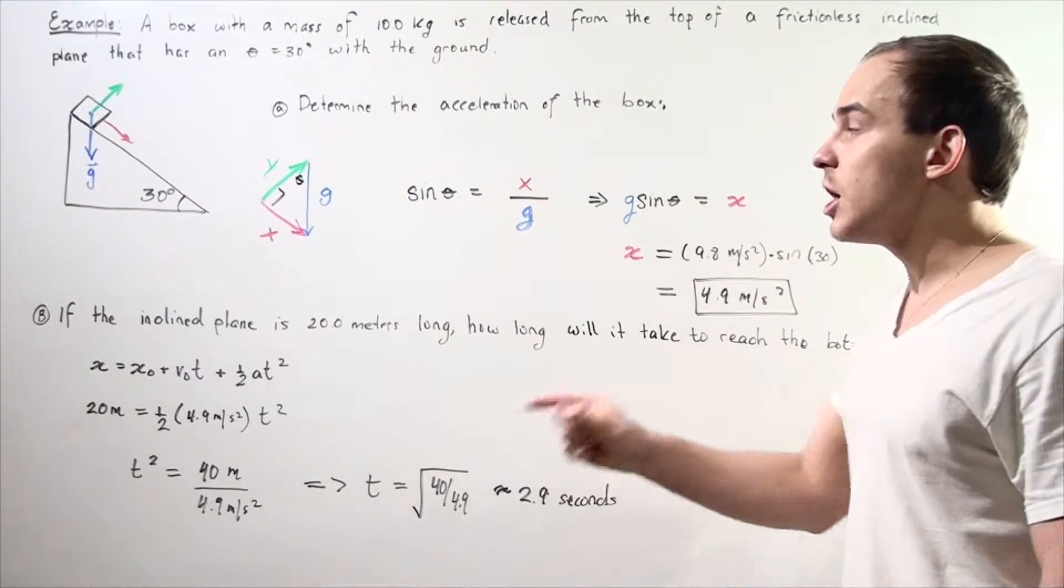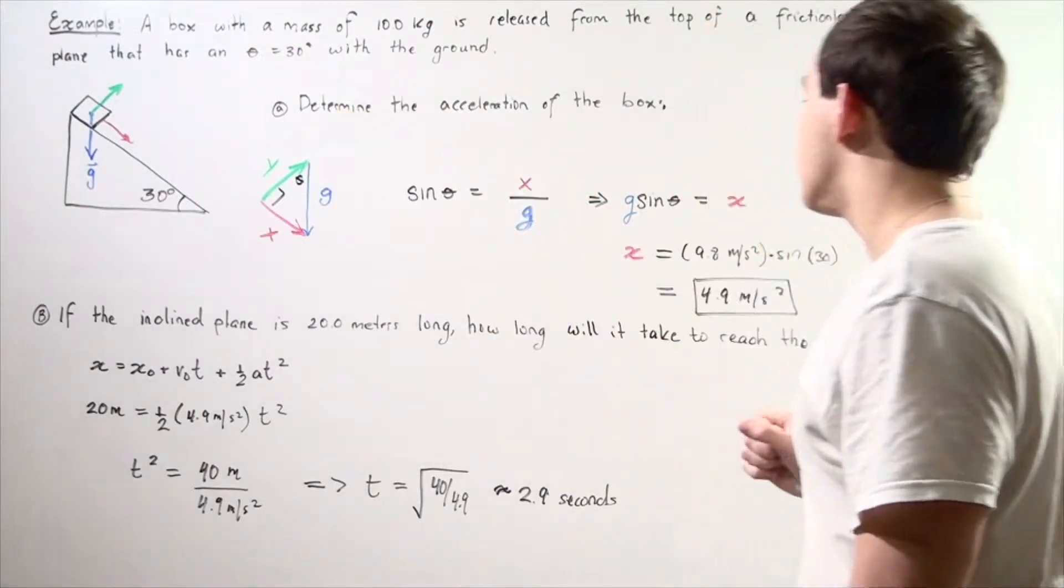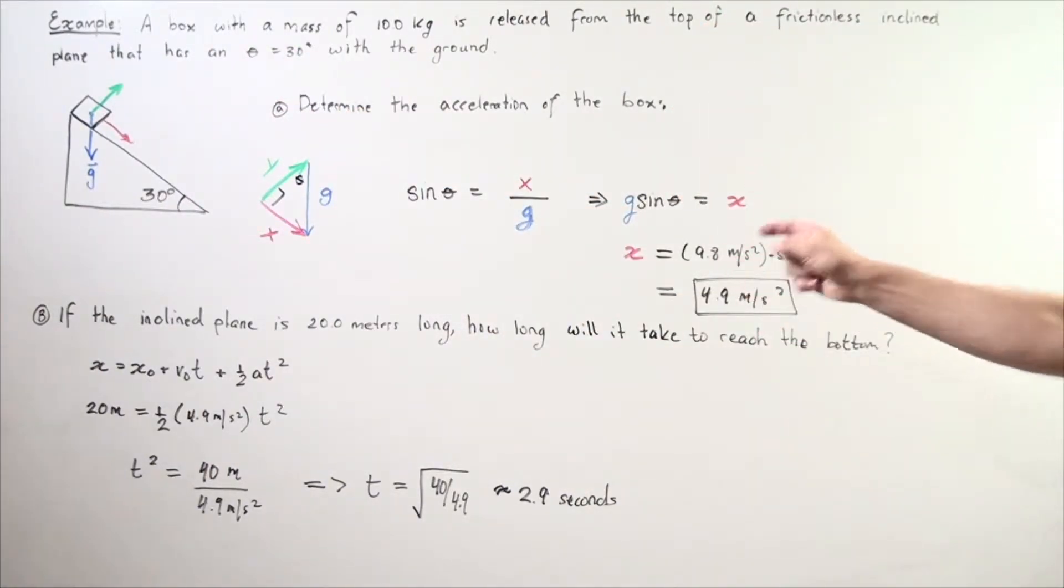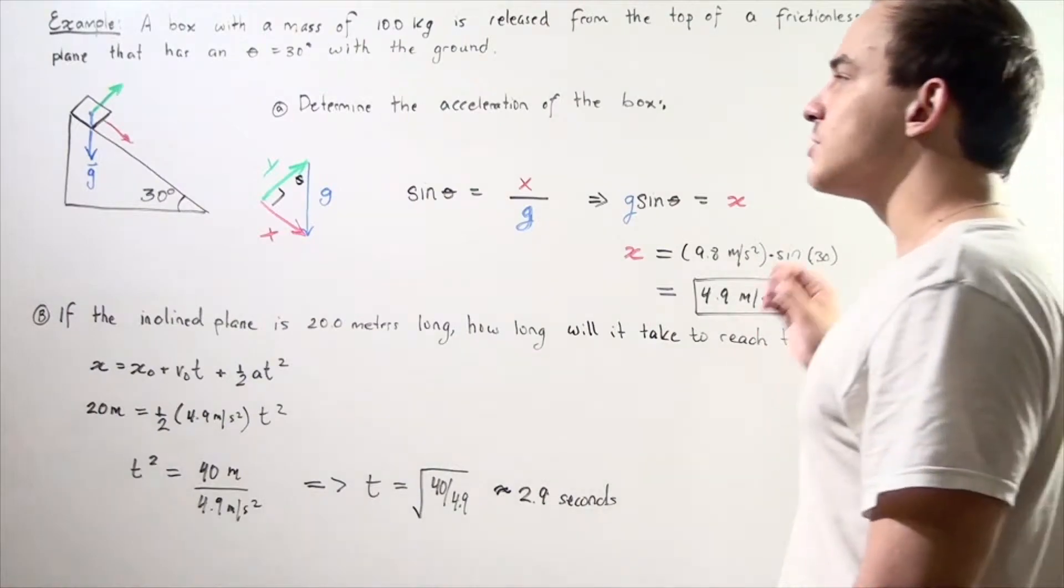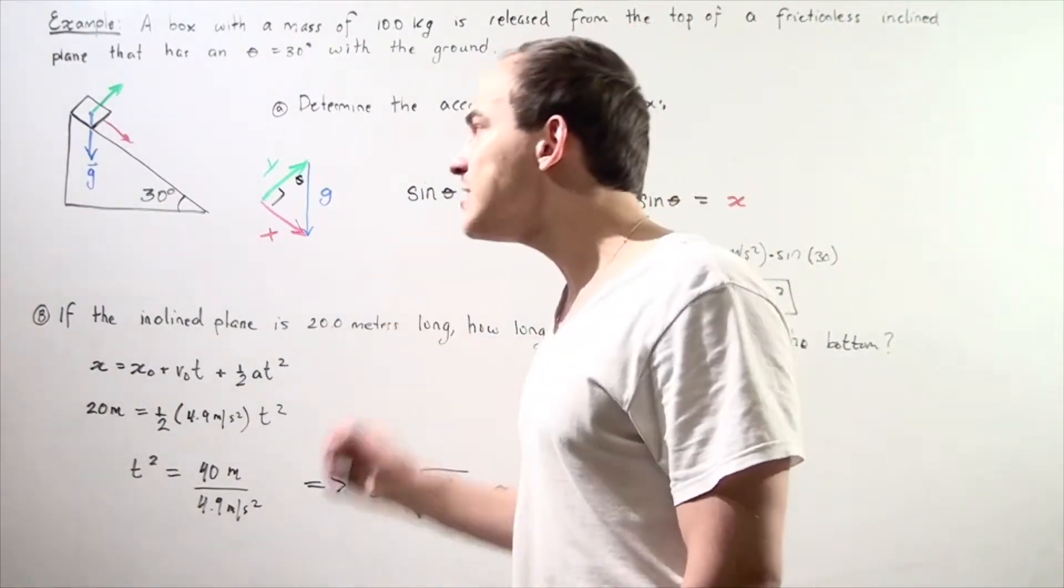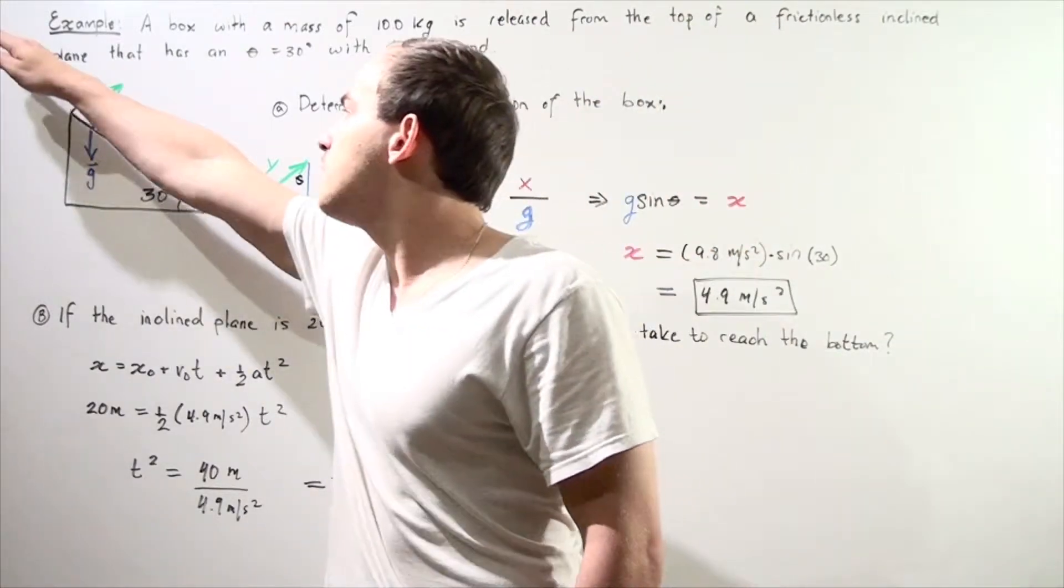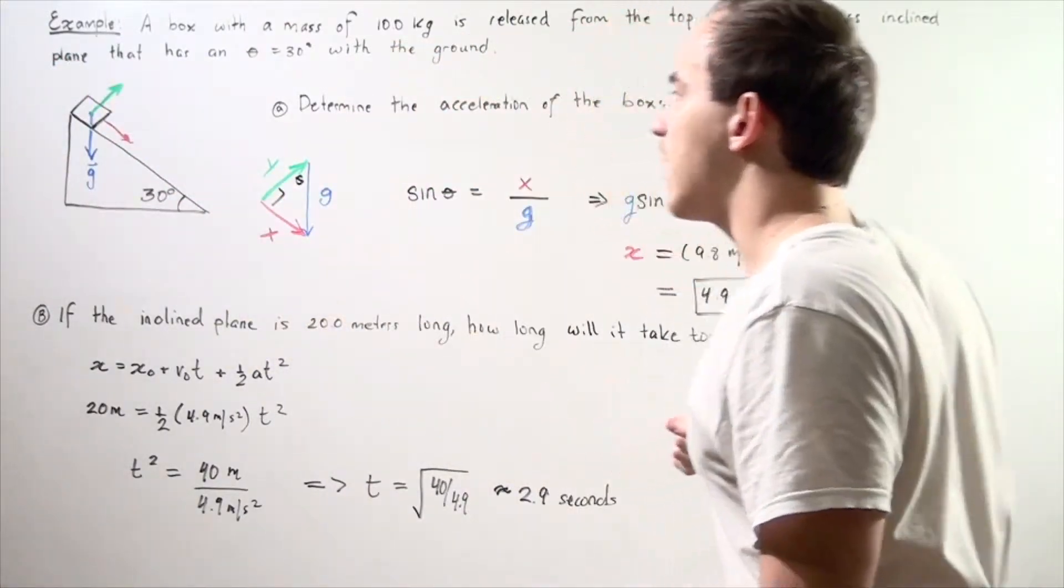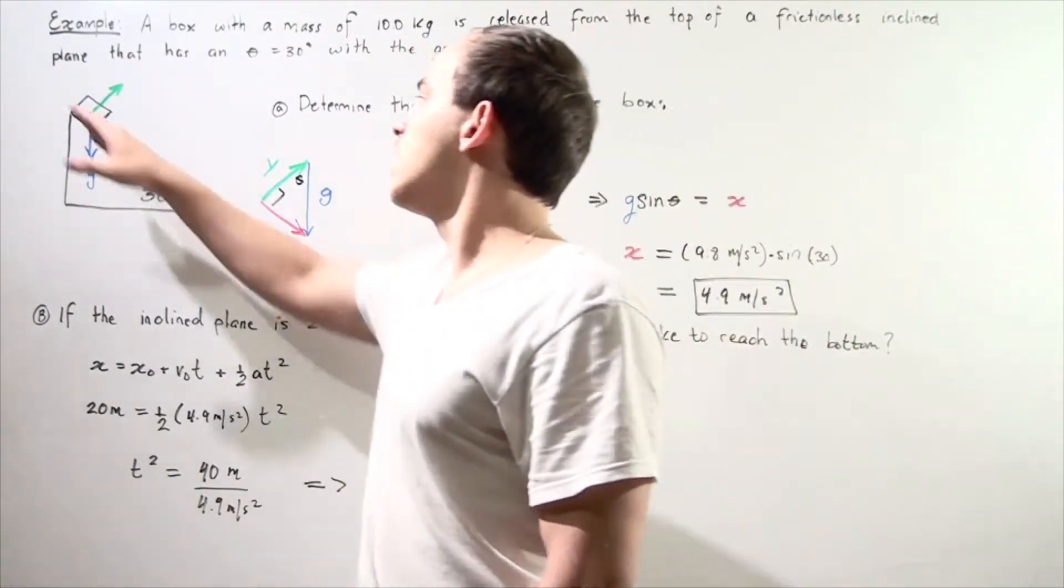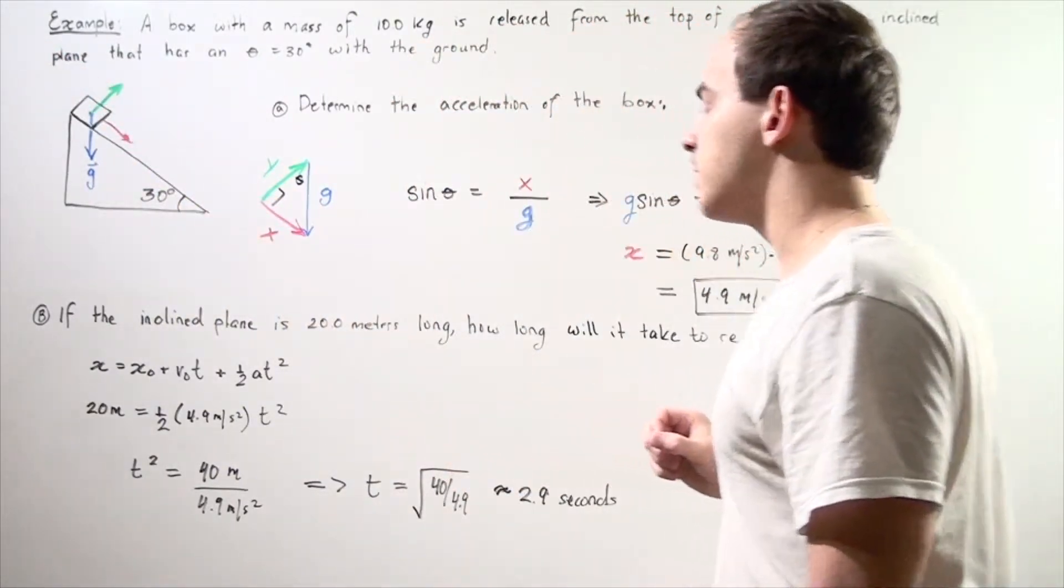And x, our acceleration of the block along the surface of the plane, is equal to 9.8 meters per second squared multiplied by sine 30. So we get 4.9 meters per second squared is our acceleration, the magnitude of acceleration due to gravity of the box going along our x-axis, along our surface of the inclined plane.